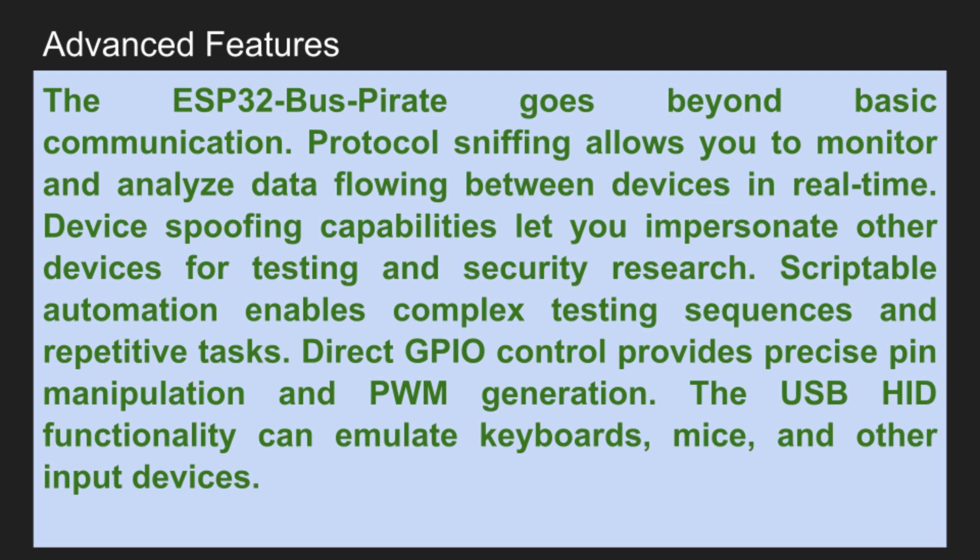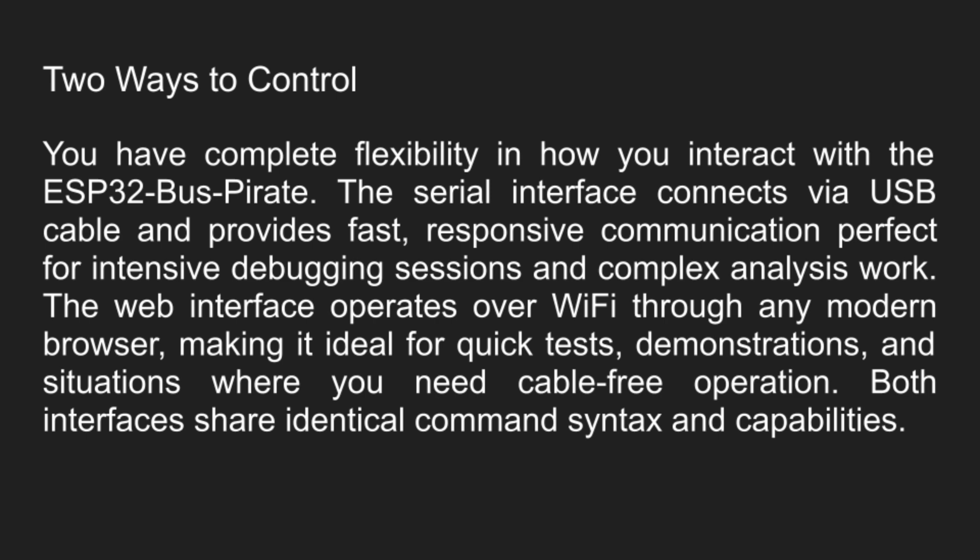It can pretend to be different devices — called spoofing. It has full Bluetooth capabilities including scanning, connecting, and even pretending to be a keyboard or mouse. Plus infrared control — it can control your TV, air conditioner, or any infrared device. And you don't even need to connect cables. You can control everything through your web browser: just connect the ESP32 to your Wi-Fi, open your browser, and you have a full command center. For real-world examples, you could be testing if a sensor is working properly or copying the code from an old remote control.